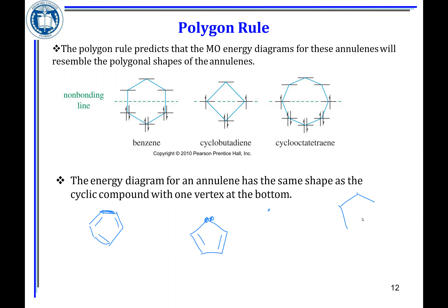If you have a compound that looks like this, is it going to be aromatic or non-aromatic? The first condition is cyclic — it is. The second condition is it must be conjugated. You do have two pi bonds, but it's not conjugated because pi bonds need to be separated by one single bond. Here you have two single bonds separating the two pi bonds, meaning you have an sp3 hybrid carbon. So these two pi bonds are not conjugated, and it's non-aromatic.